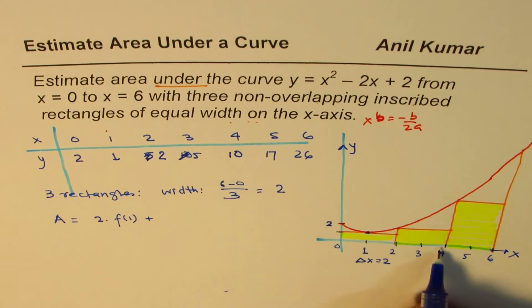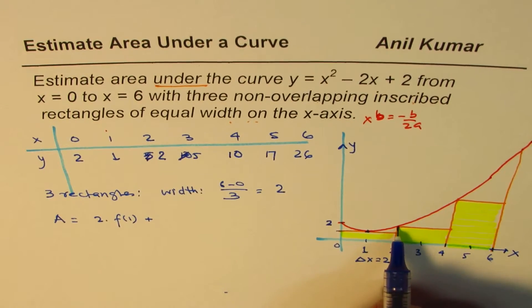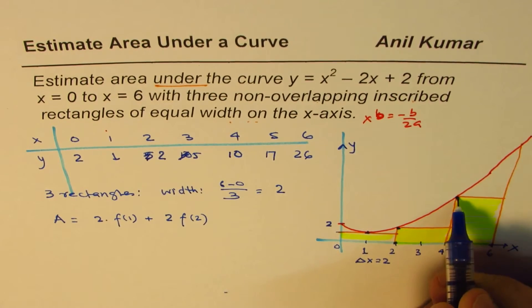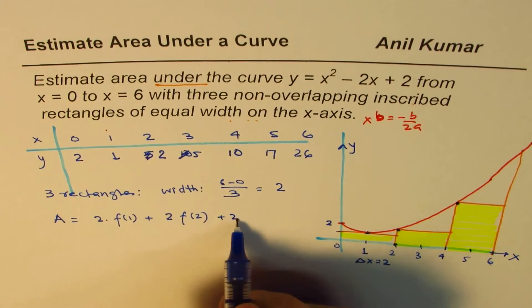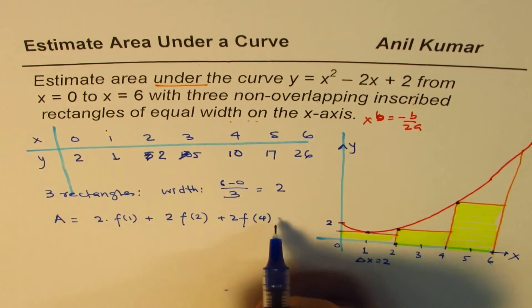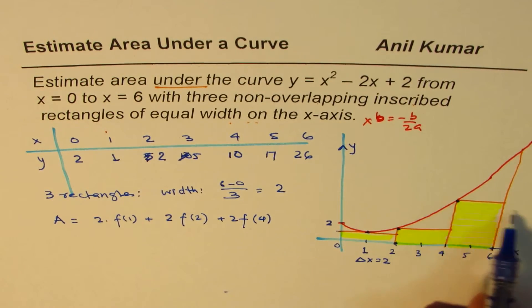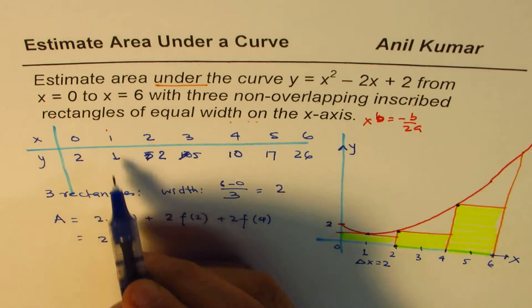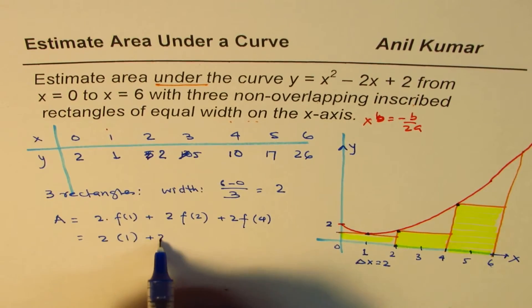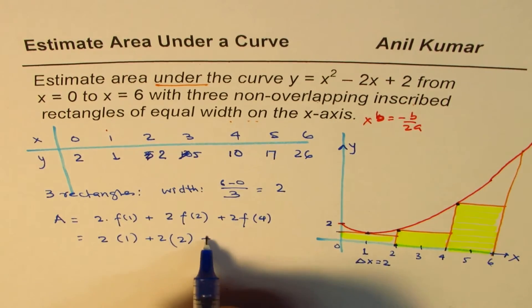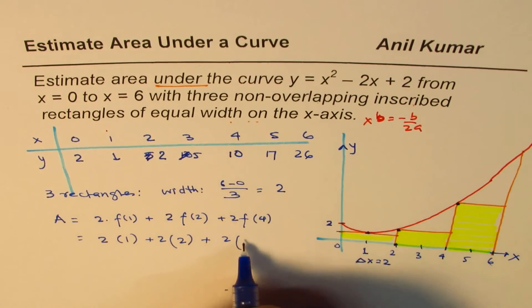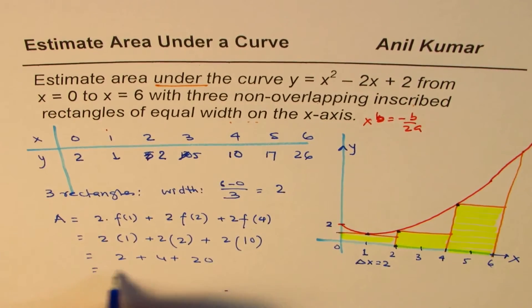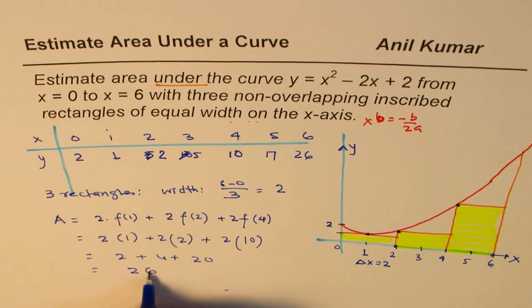For the other one, value of function at 2. So 2 is the width times value of function at 2. And for the third one, we are taking 2 as the width and value of the function at 4. So that is how we are finding the height of these rectangles. And this table now helps. So we have 2 times value of function at 1 is 1 plus 2 times value of function at 2 is 2 plus 2 times value of function at 4 is 10. So that gives us 2 plus 4 plus 20, and that is 6 plus 20, 26 unit square.